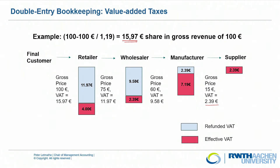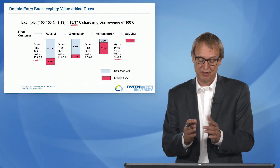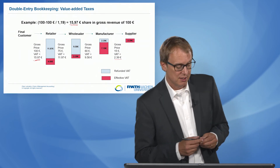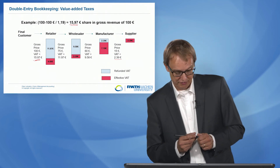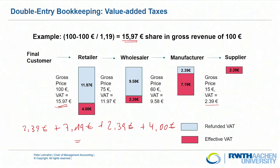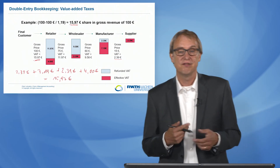The retailer then sells it to the final customer for 100 euros, and we already know the VAT share is 15.97 euros. Overall, this flows through the chain: the supplier pays, the manufacturer gets it back and pays, the wholesaler gets it back and pays, and the retailer gets it back — but the final customer ultimately pays these 15.97 euros. The effective VAT collected by the financial authority is 2.39 + 7.19 + 2.39 + 4.00 = 15.97 euros, which is what the financial authorities receive as the effective value-added tax on this product.